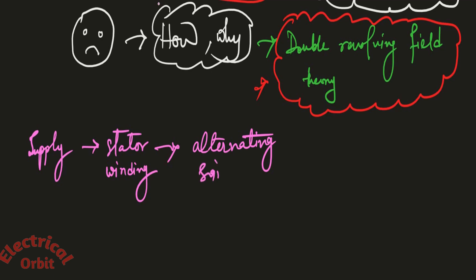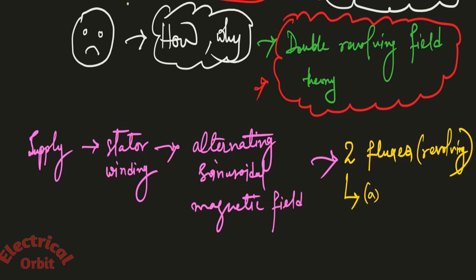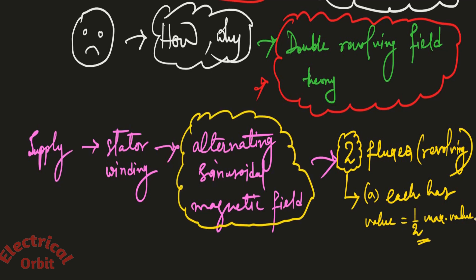Now this particular field can be divided into, or better to say, represented into two fluxes which are of course revolving in nature. An explicit characteristic is that each has a value equal to half of the max value of the flux. That means each of these two fluxes will be exactly half the value of the flux that has been created by the supply to the stator winding of this induction motor. And next is each one is rotating at synchronous speed in opposite direction to each other.